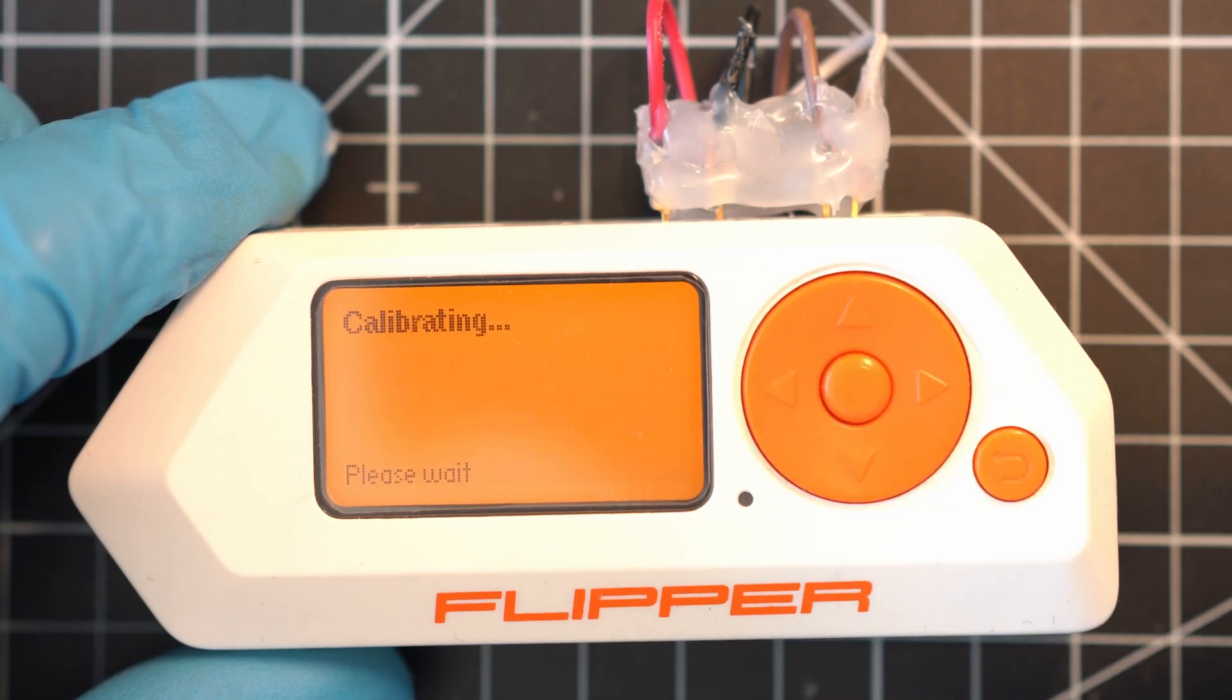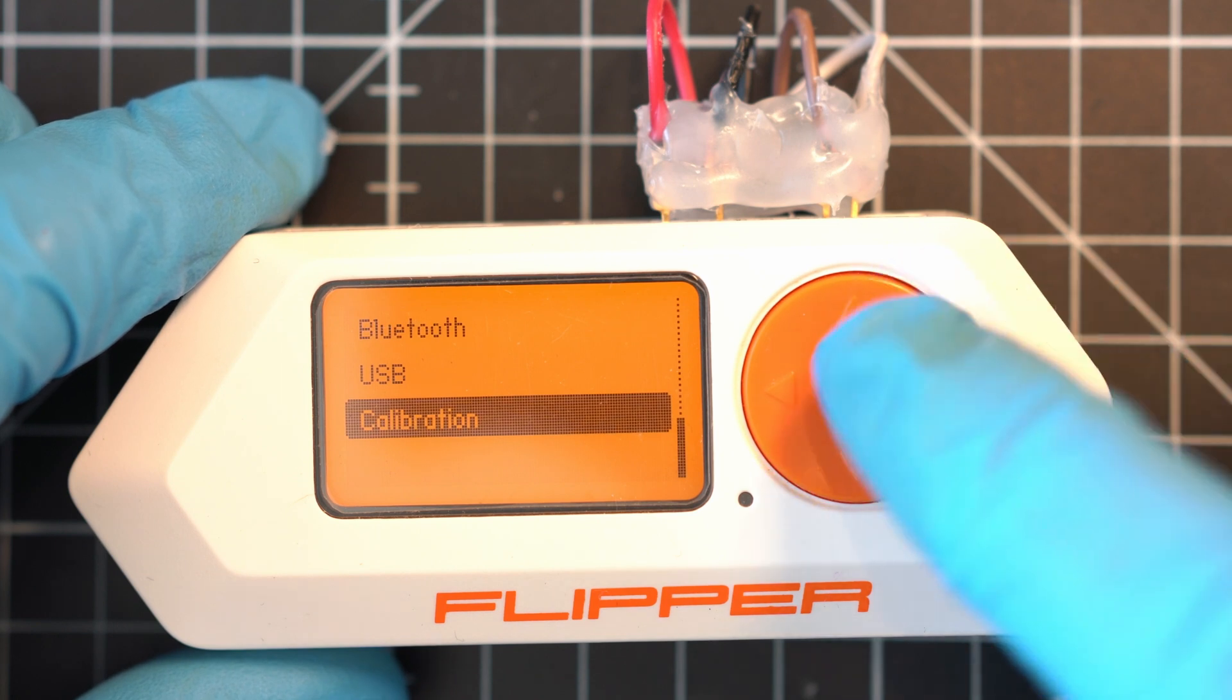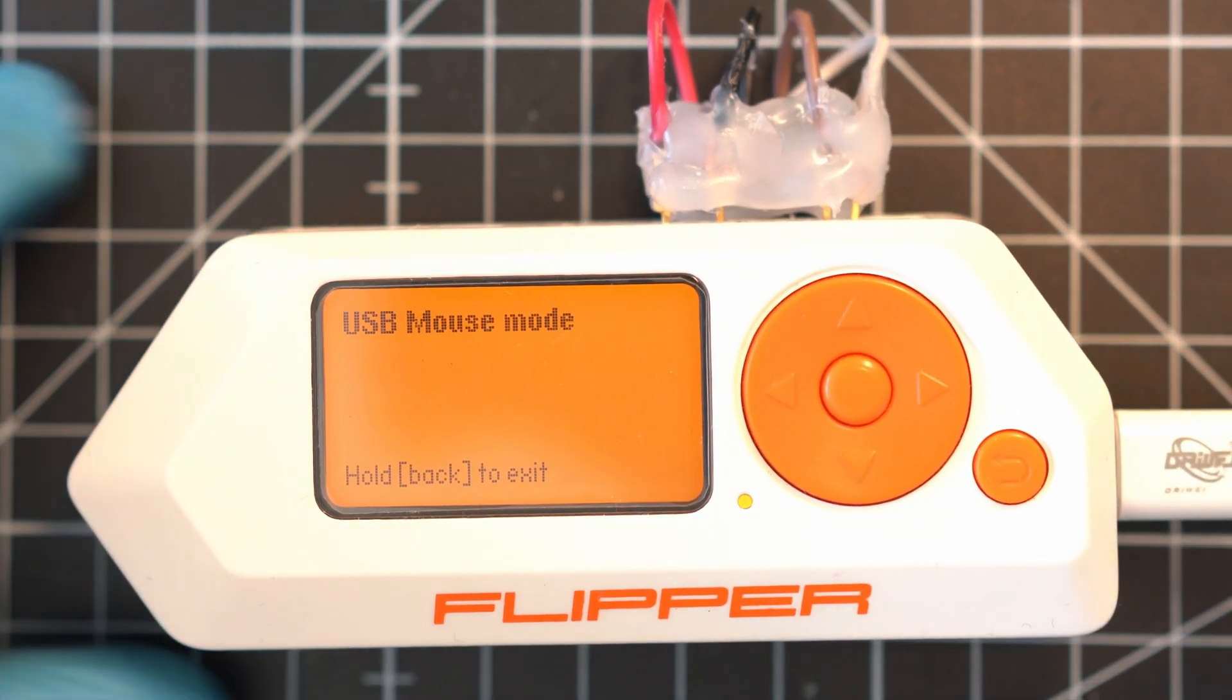For calibration, put your Flipper Zero on the table, wait 2 seconds and done. Now it should behave normally.